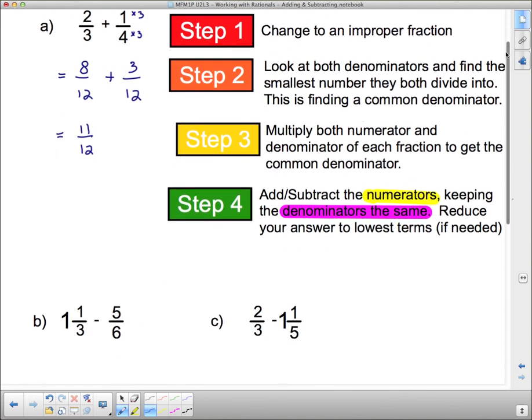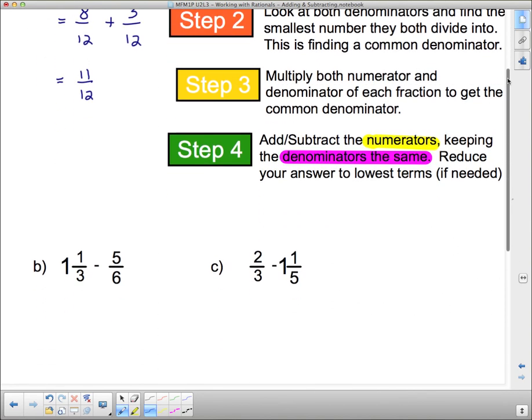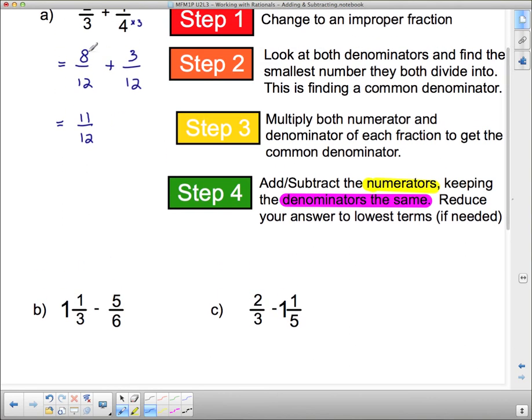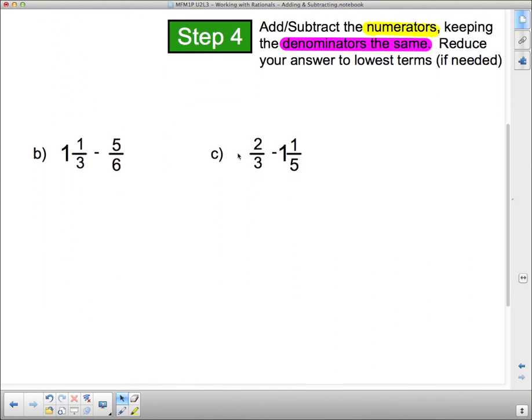Okay, now we're going to do the same thing with subtraction because the steps are exactly the same. The only difference is when we're done, we're going to subtract the numerators instead of add the numerators. Now, remember the first step was to change into an improper fraction. You can do it without changing into an improper fraction, but it's much easier if you change it to an improper fraction. So let's change this one to improper. 3 times 1 is 3, plus 1 is 4. So this is 4 thirds, and we're subtracting 5 sixths.